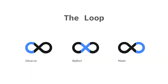The IBM Loop is a visualization of the firm's approach to design thinking. It represents a continuous cycle of observing, reflecting and making. Observing is about immersing yourself in the real world of your users via design research. This may involve interviews, user observations and online research.